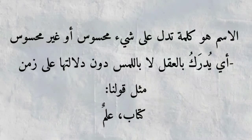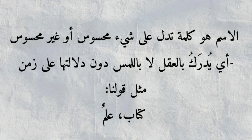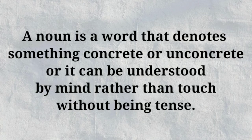Before I tell you how to recognize ism and fi'l, first of all I would like to define what is ism. Al-ismu huwa kalimatun tadullu ala shayin mahsusin aw ghayru mahsusin, ay yudraku bil-aqli la bil-lamsi, duna dalalatiha ala zaman, mithl qawlina: kitabun, alimun. In English we can say: a noun is a word that denotes something concrete or abstract, understood by mind rather than touch, without indicating tense.